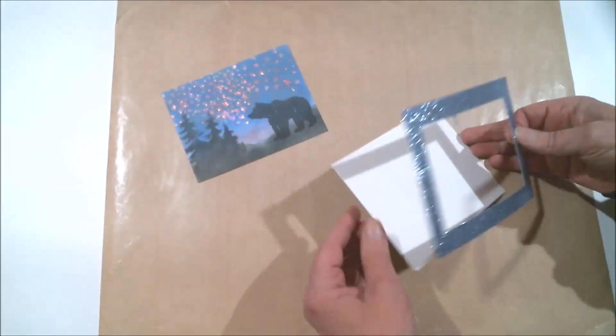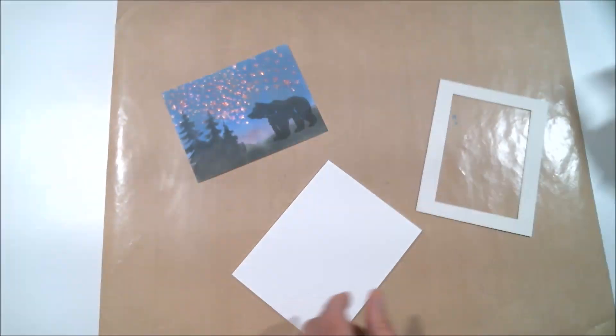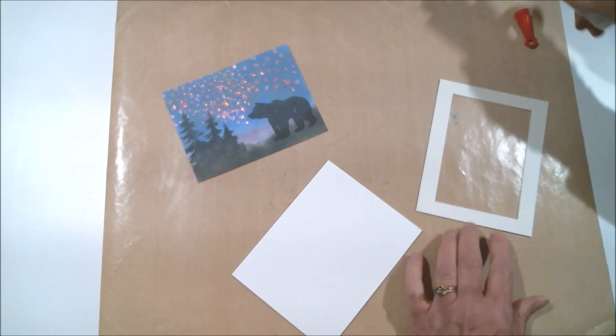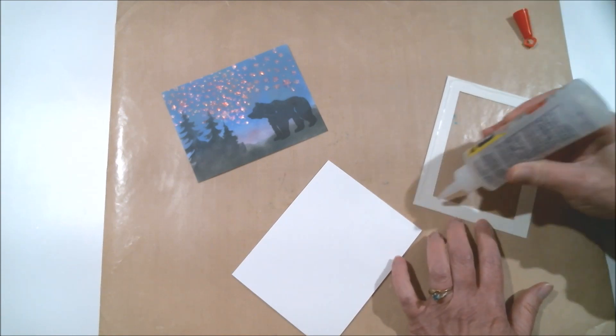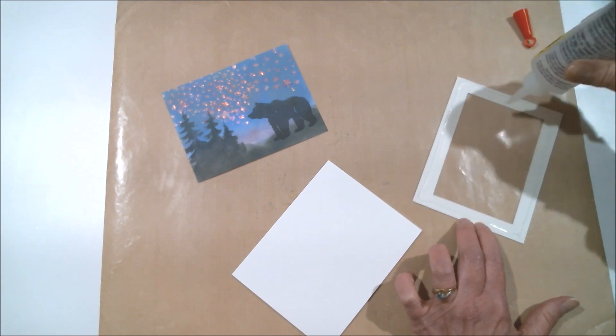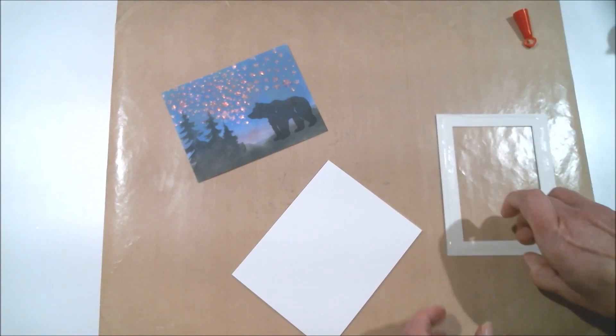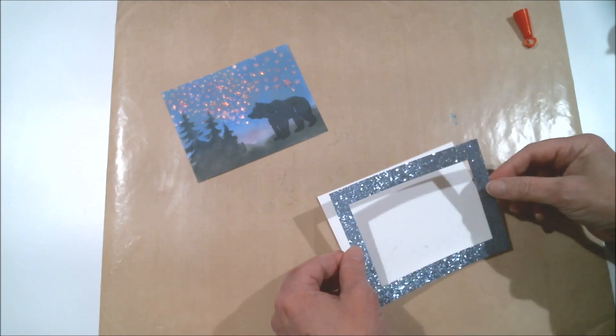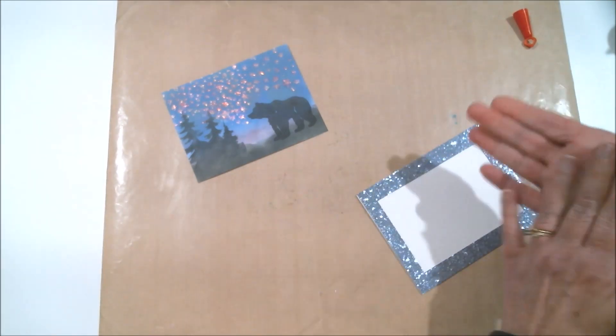Okay, it's time to start putting this card together and I am using some Close To My Heart glitter paper and my favorite paper saving technique by cutting the center out of it, since no one's ever going to see it. And I'm going to get that glued right on to the front of the card and I was using my Beacon Three-In-One to get that done.